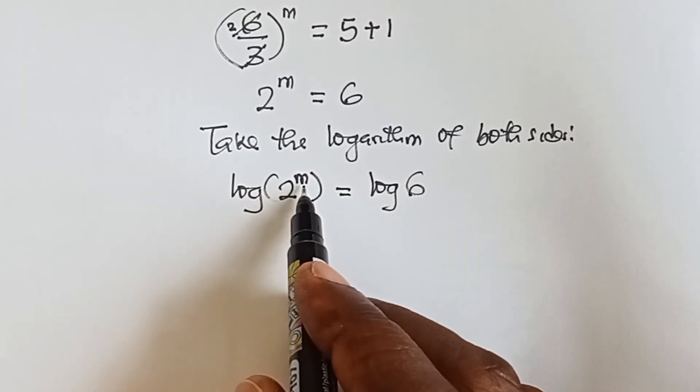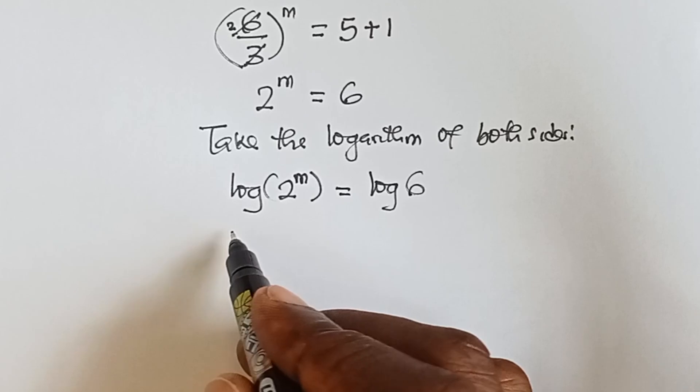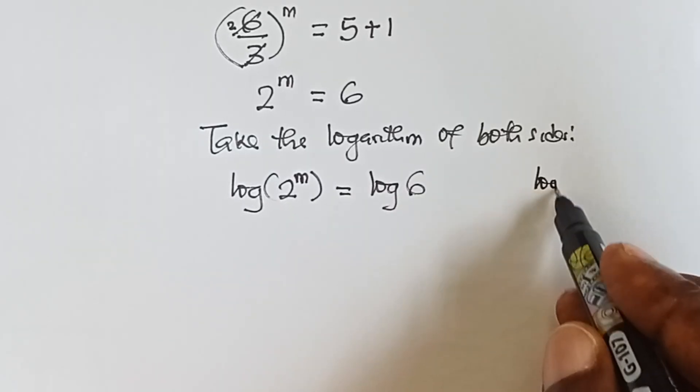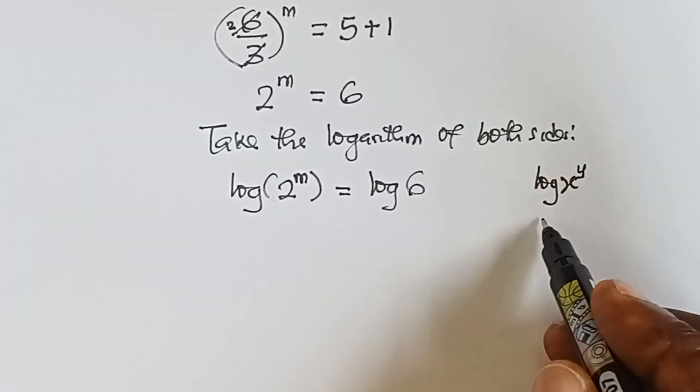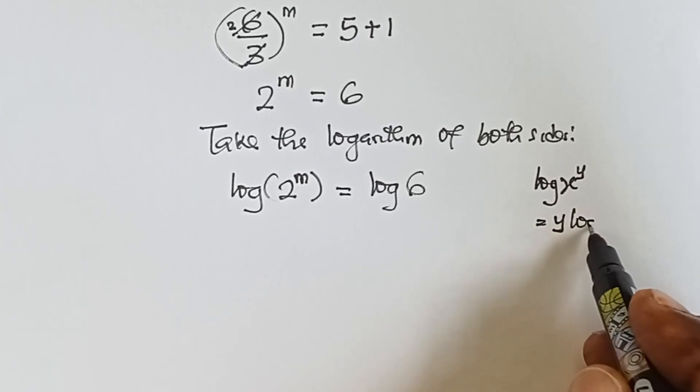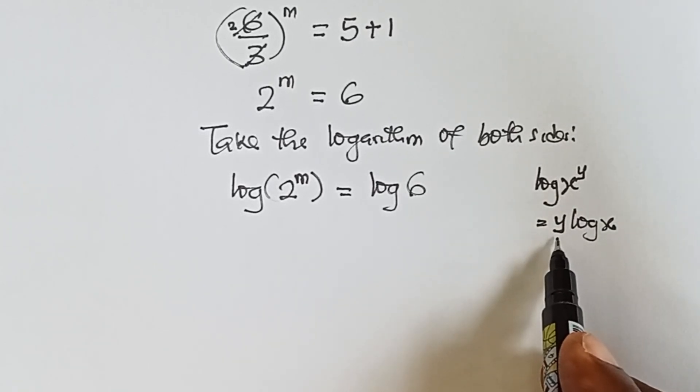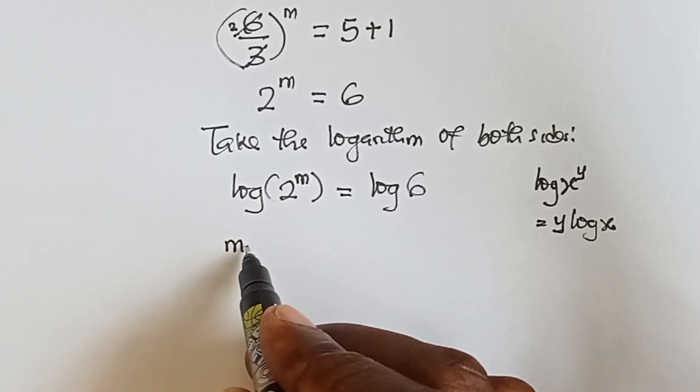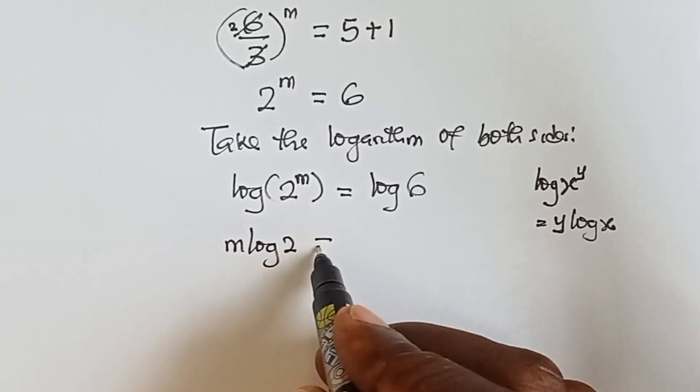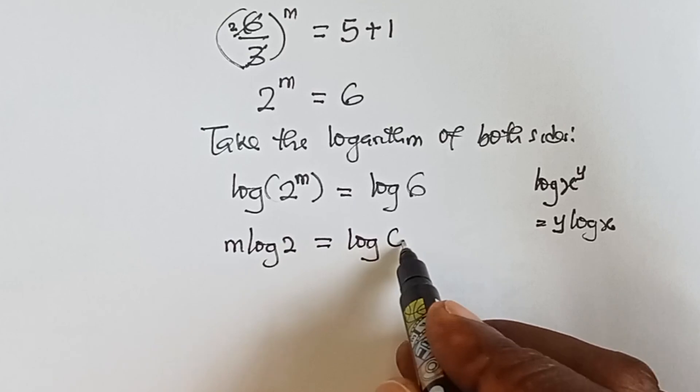We can take this m to the back, because one of the laws of logarithm is that when you have log x raised to power y, it becomes y log x. So we bring this m here. It becomes m log 2 equals to log 6.